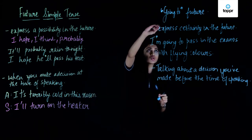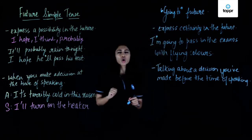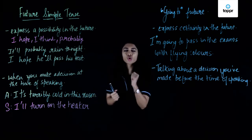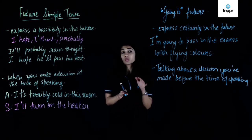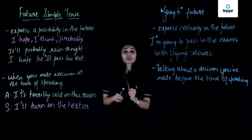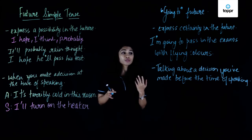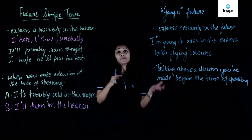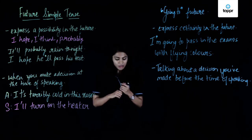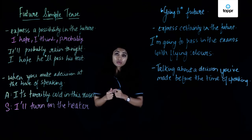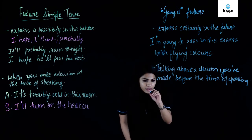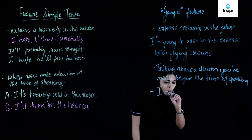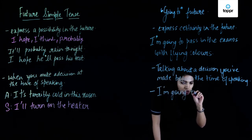The going to future is used to express certainty in the future. When I'm certain about something I would say, 'I am going to pass the exam with flying colors because I know I've been working very hard.' We also use the going to future when we talk about a decision that has already been made before the time of speaking. For example, if my friend is new in town and says she wants to see Mumbai, I would say, 'I'm going to show you around' — I've already made this decision.